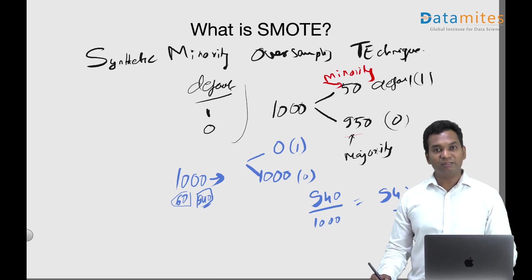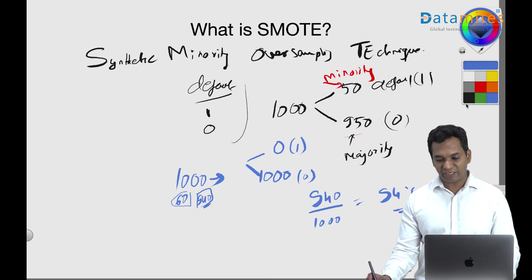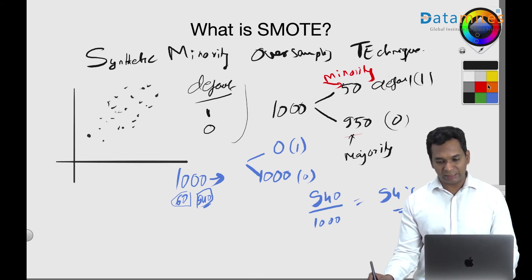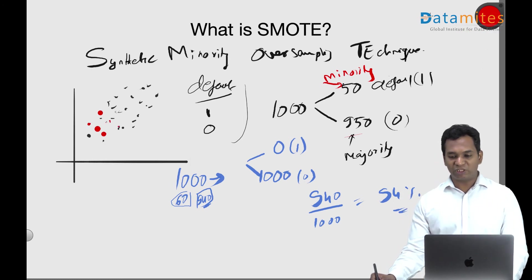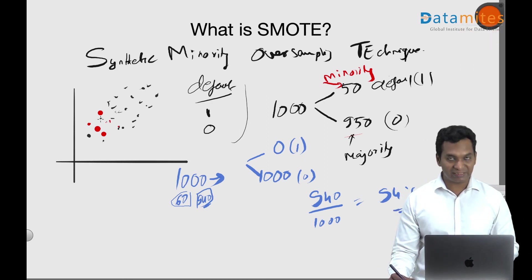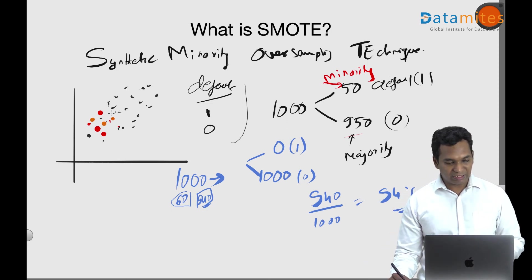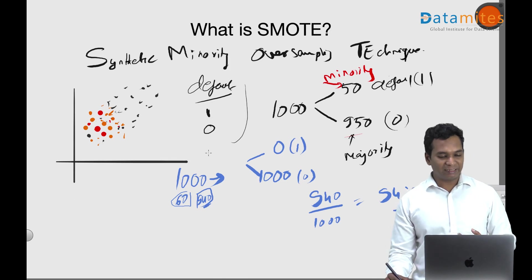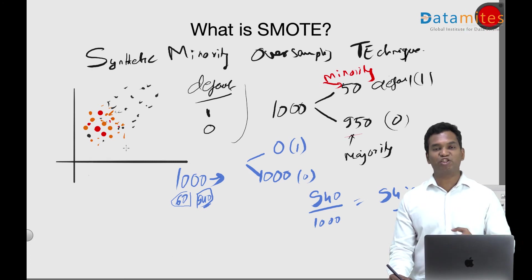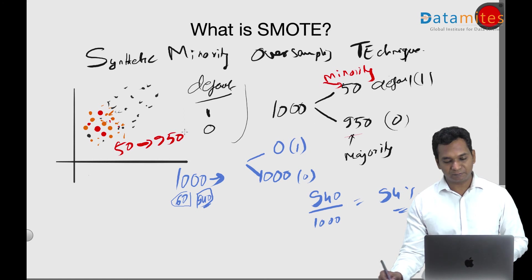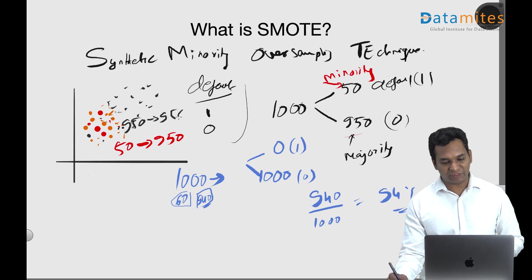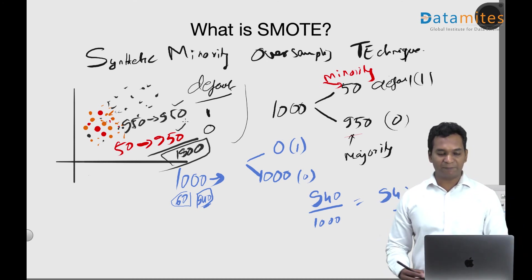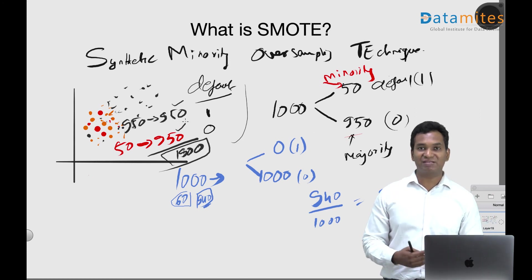What SMOTE does is normalize this imbalance. We create new data by extrapolating or interpolating — basically averaging the minority class records to generate new synthetic data. So those 50 default records get averaged over and over to bring them up to 950. The majority class stays at 950, so the total becomes 1900 records, properly balanced with both classes at 950.